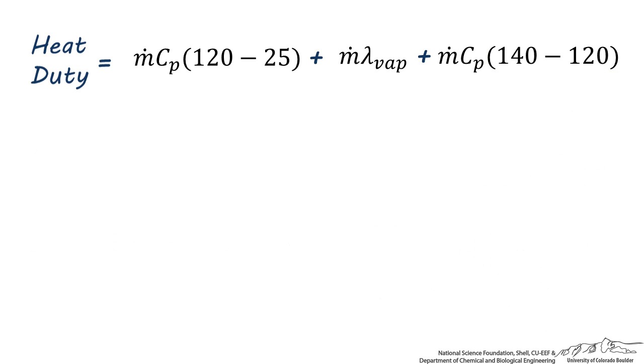After all these values have been combined, we're left with a final answer of 166 kilojoules per second. This means that our heat exchanger requires 166 kilojoules per second of energy to heat up one gallon per minute of water from room temperature to 140 degrees centigrade.